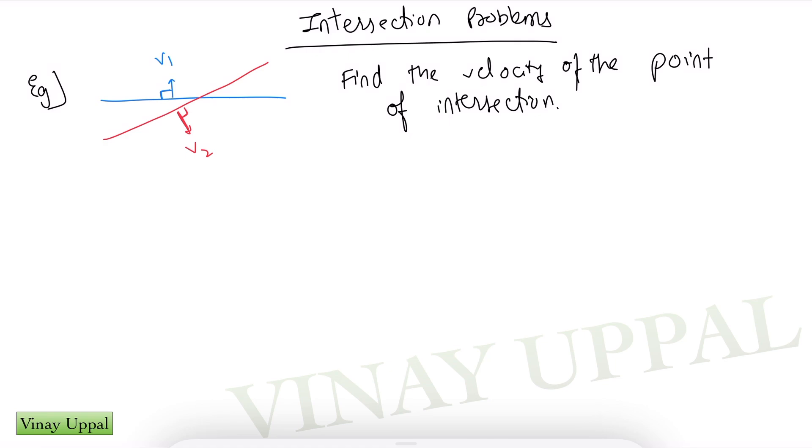In such questions where they ask you to find the velocity or the acceleration of the point of intersection, you should realize that it's not a material particle that is traveling. The velocity of point of intersection is basically the velocity of the imaginary trajectory traced out by the intersection points.